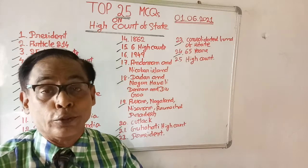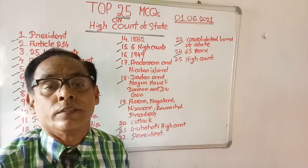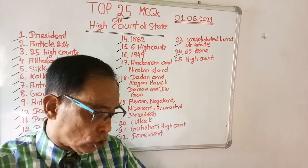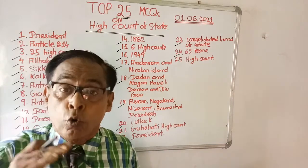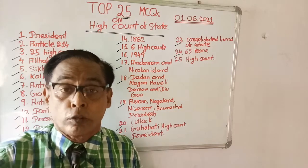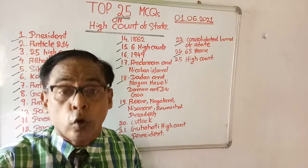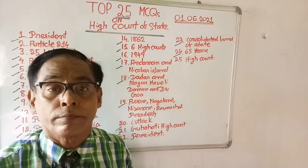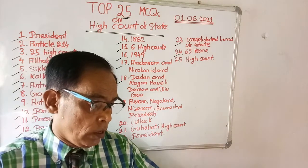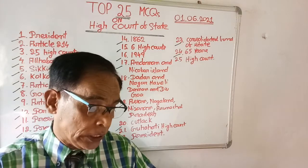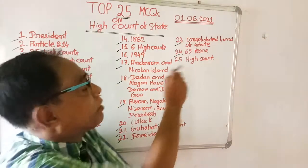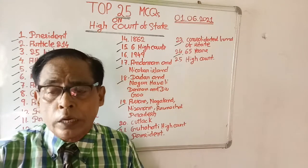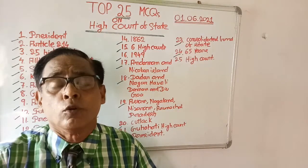Question number twenty-five, the last question: which court has the power of superintendence over all lower courts within the state? Options are: Supreme Court, District Court, and High Court. The right answer is High Court — the High Court has the power of superintendence over all the lower courts within the state.